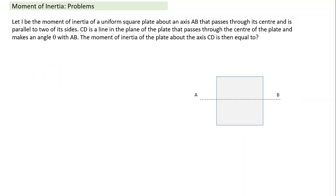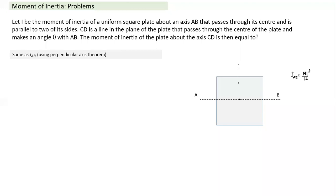For a square lamina: axis AB passing through center and parallel to two sides has moment of inertia I_AB = M·l²/12 (same as a rod of that length). By symmetry, axis CD perpendicular to AB also gives I_CD = M·l²/12. By perpendicular axis theorem, I_O (perpendicular to the plane through center) = I_AB + I_CD = 2·M·l²/12 = M·l²/6.